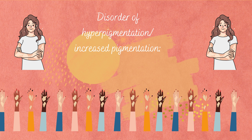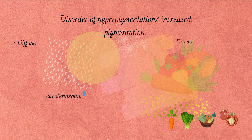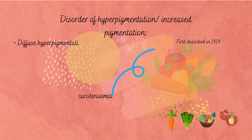Hyper means more and pigment means color. Hyperpigmentation can appear as brown, black, gray, red, or pink spots or patches. The spots are sometimes called age spots, sun spots, or liver spots. Diffuse hyperpigmentation is most commonly due to hypermelanosis.